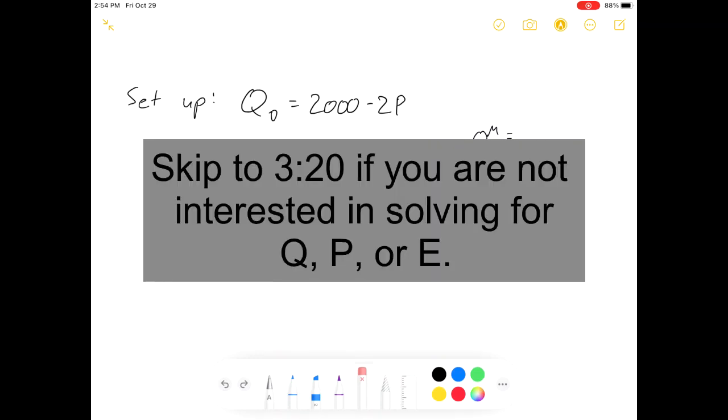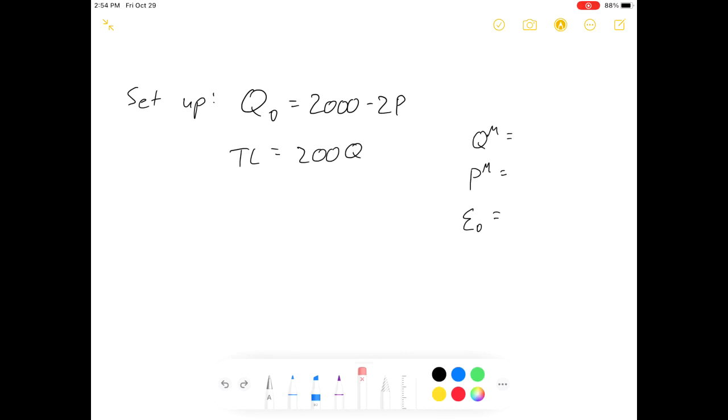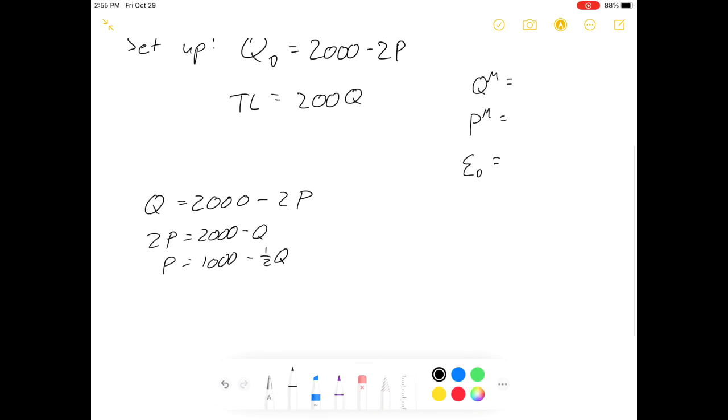All right. I'm assuming you've done it by now. If you're ever going to, let's get to work. First thing I'm going to do is I'm going to invert my demand curve. Q equals 2000 minus 2P, which means 2P equals 2000 minus Q, which means P equals 1000 minus half a Q. I know it was a little speedy, but deal with it.